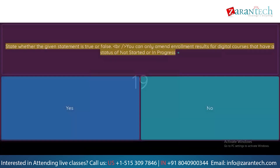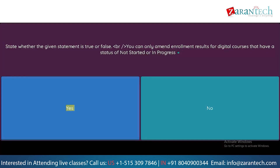Question: State whether the given statement is true or false. You can only amend enrollment results for digital courses that have a status of Not Started or In Progress. Option 1: Yes. Option 2: No.